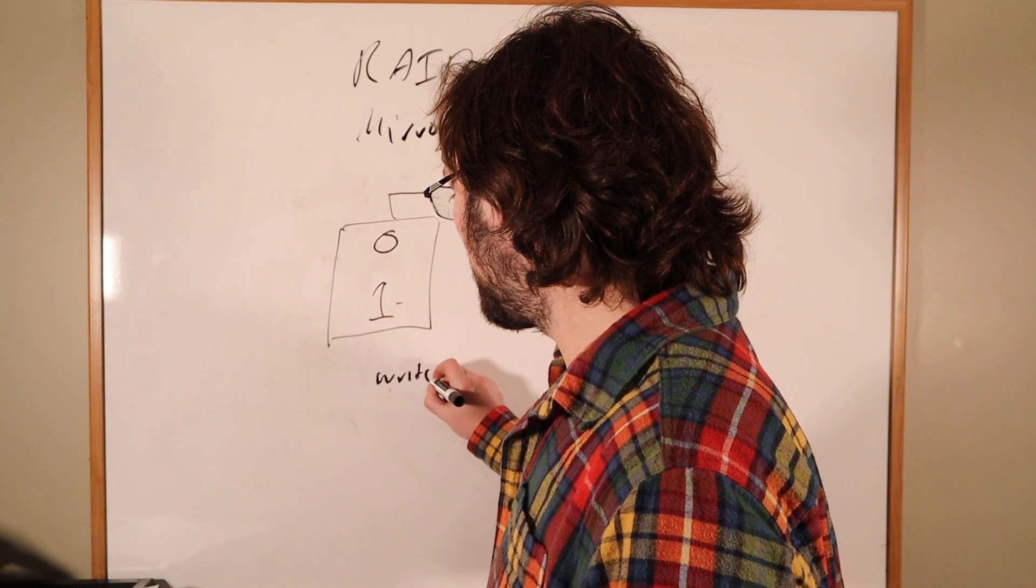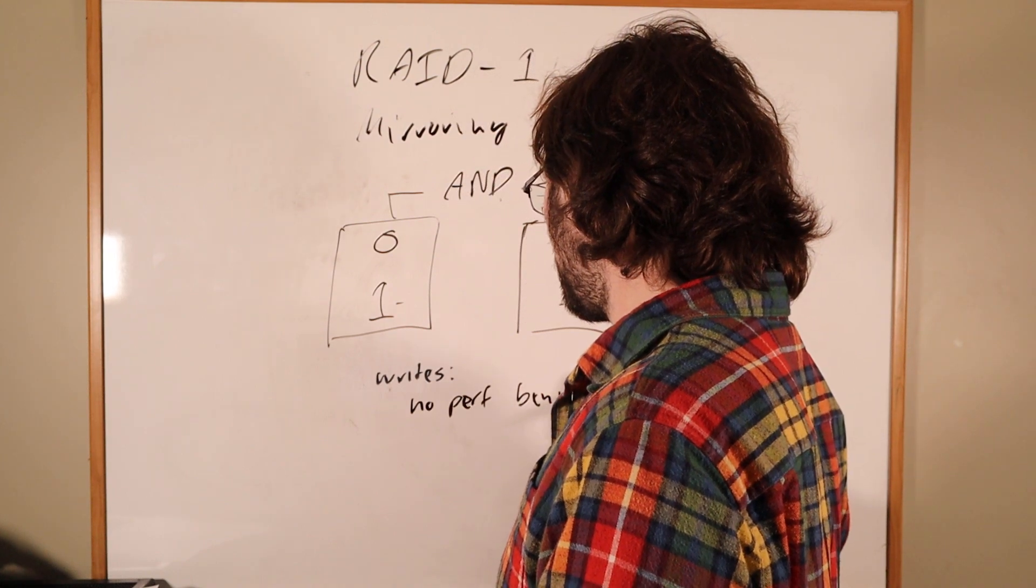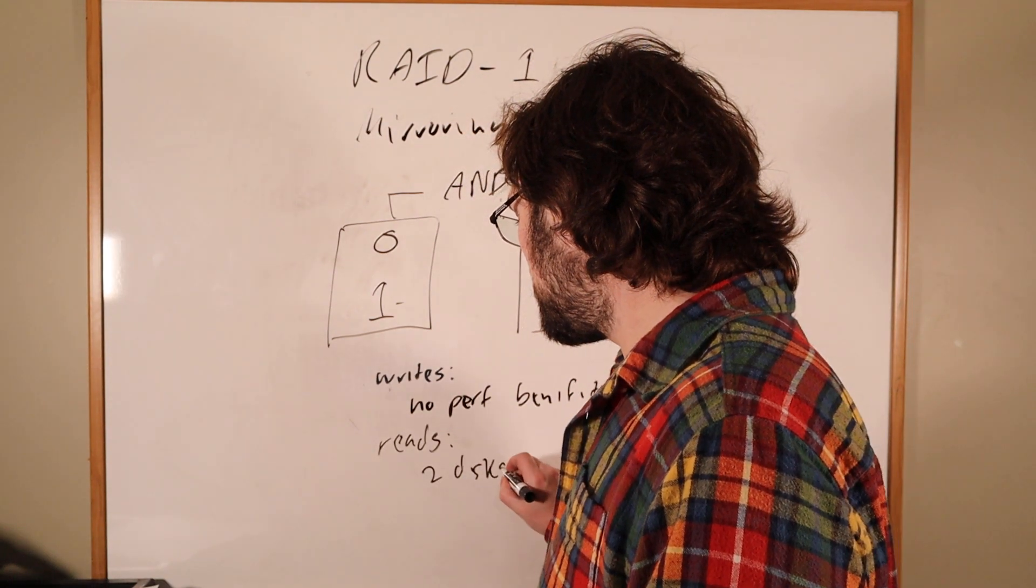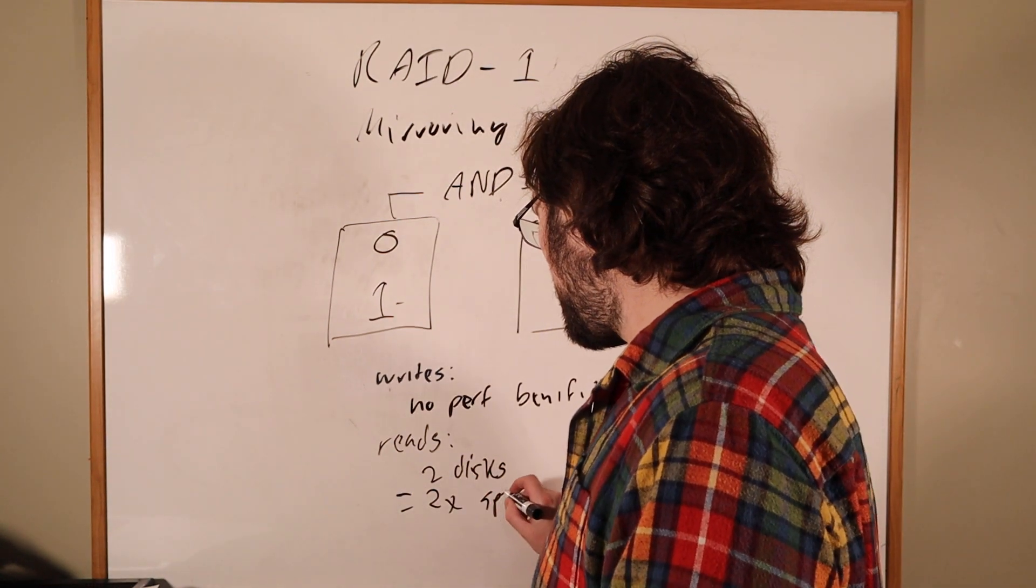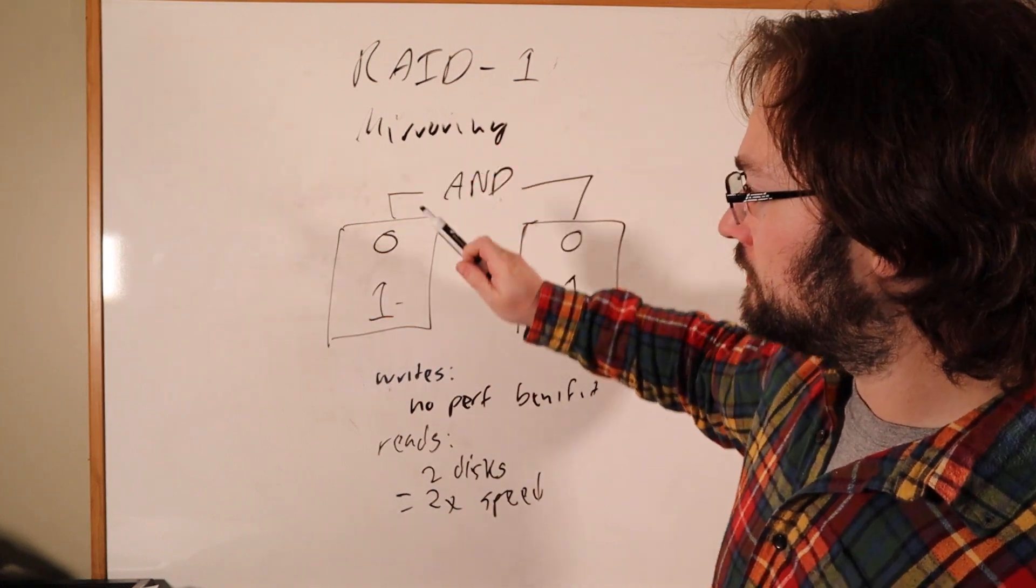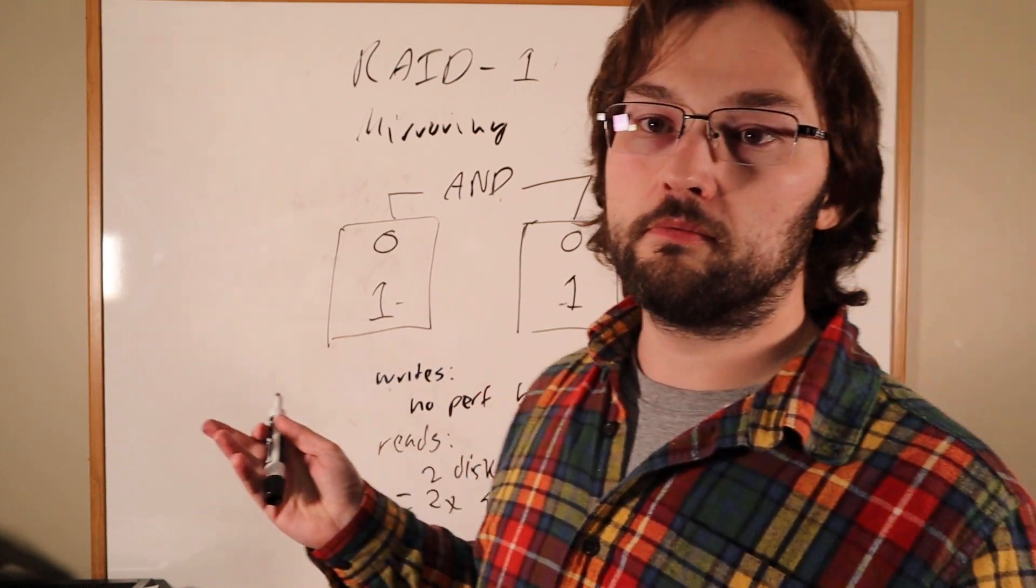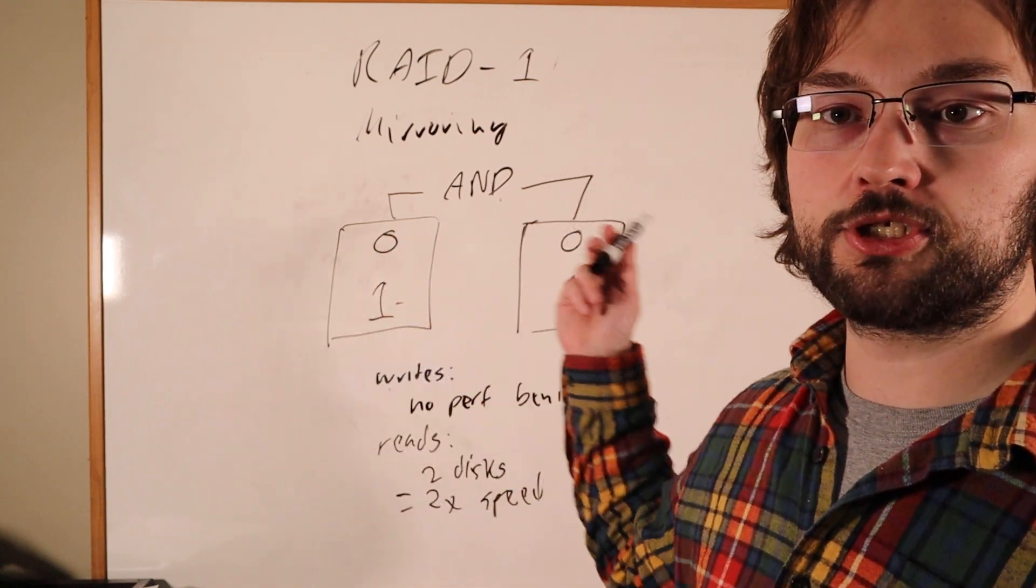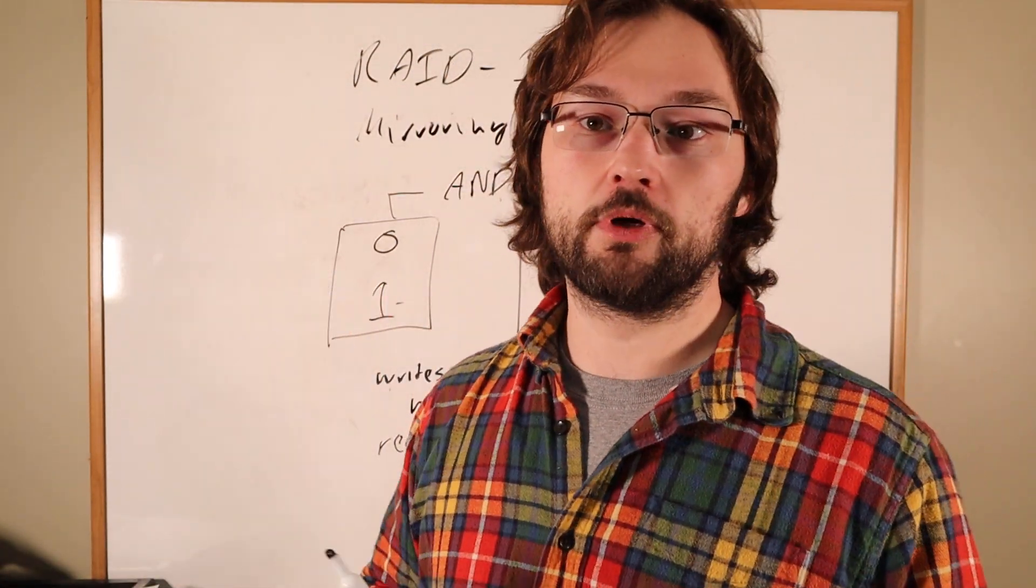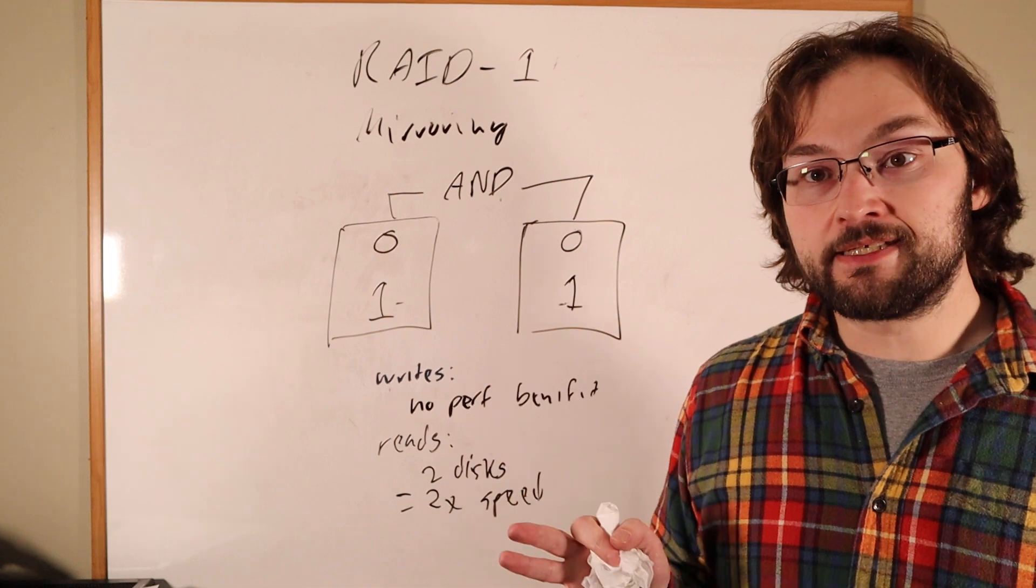And it turns out that this actually isn't nothing for performance. On writes, there's no performance benefit. But on reads, two disks means twice the speed. Because just like with striping, we can read block zero from one disk and we can read block one from the other disk in parallel. We have to have the RAID controller or the driver be clever enough to schedule which block gets read from which disk. It's a pretty straightforward scheduling problem and we should be able to go twice as fast because we have twice as much hardware to actually do the reads off of.